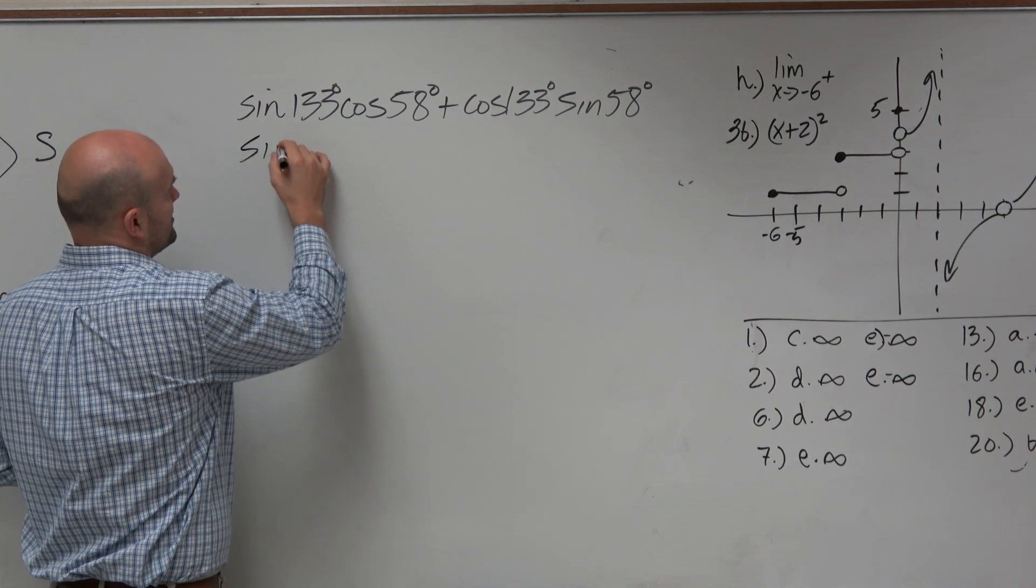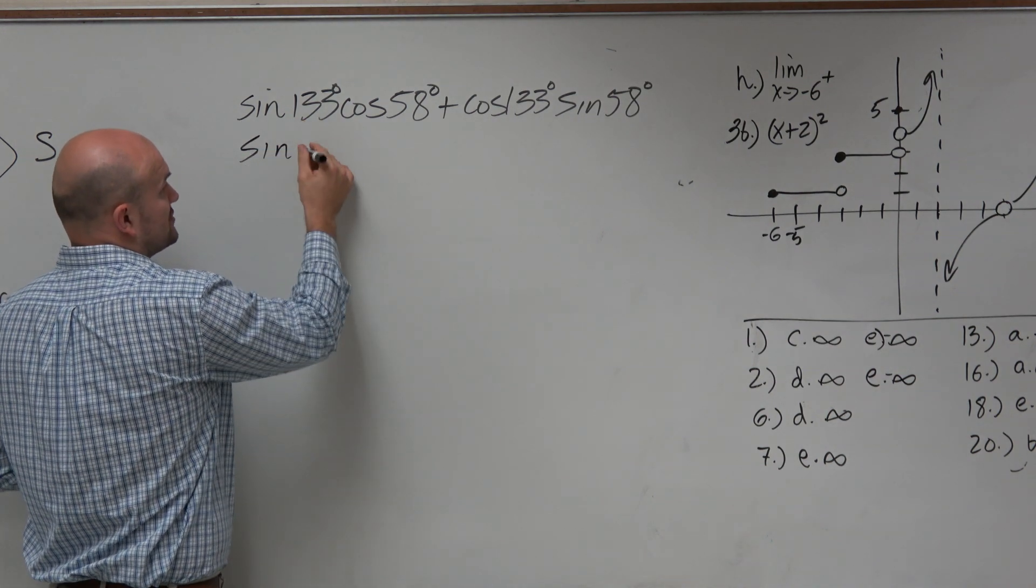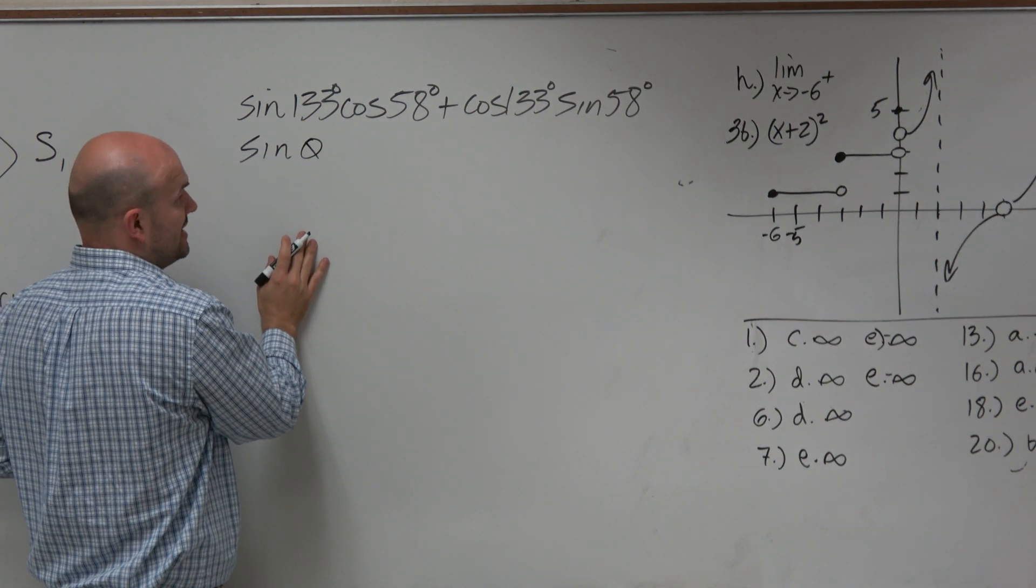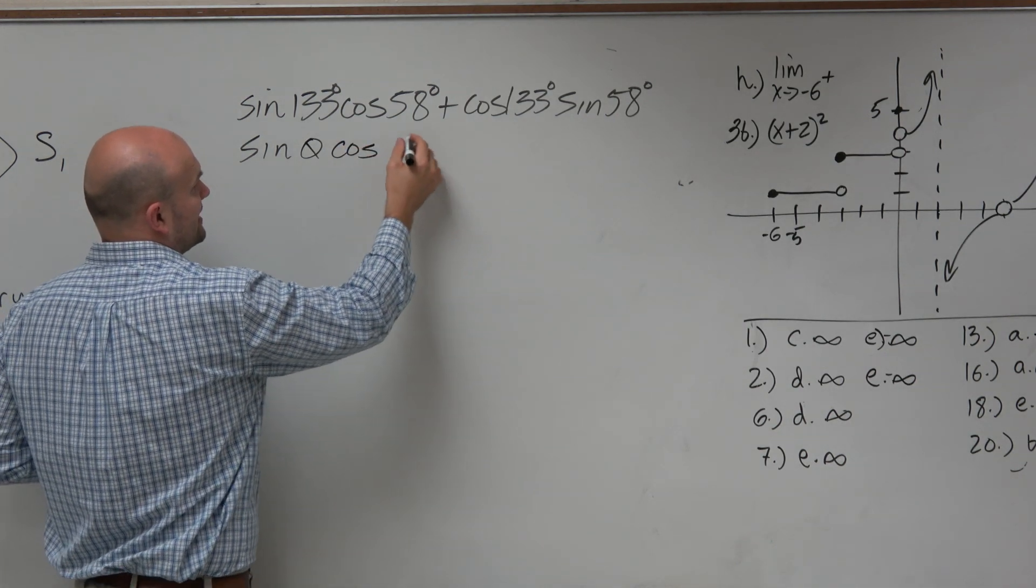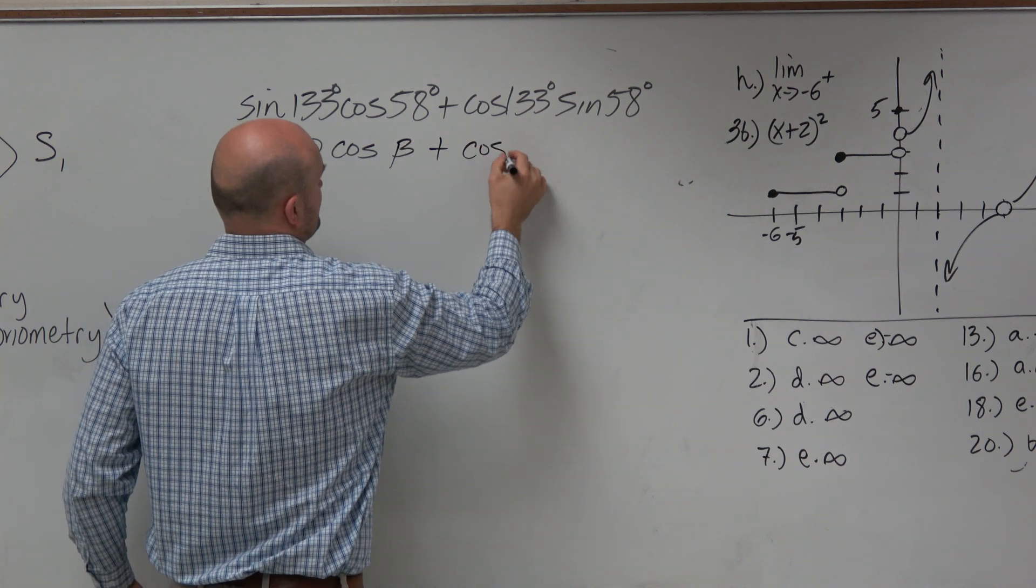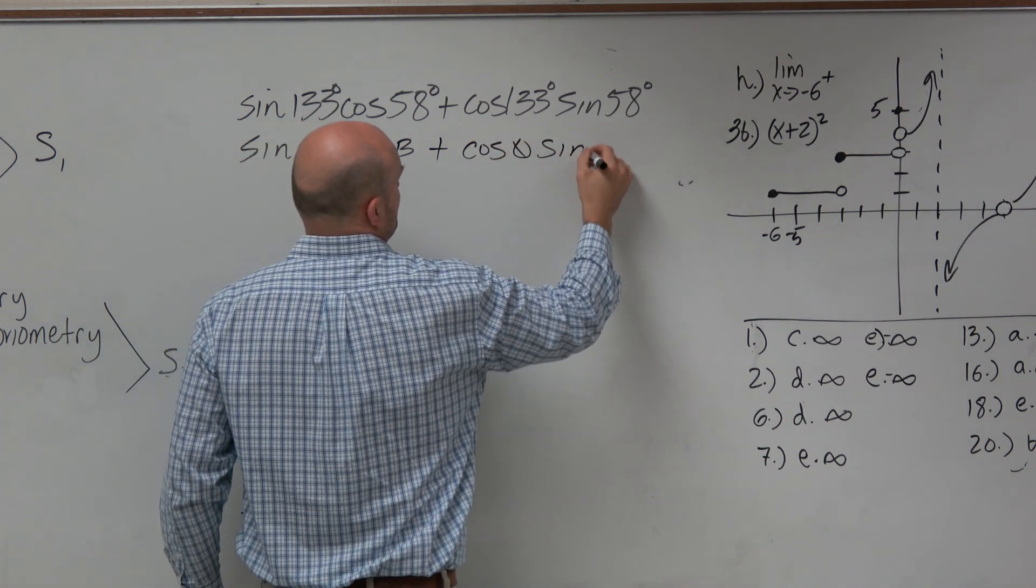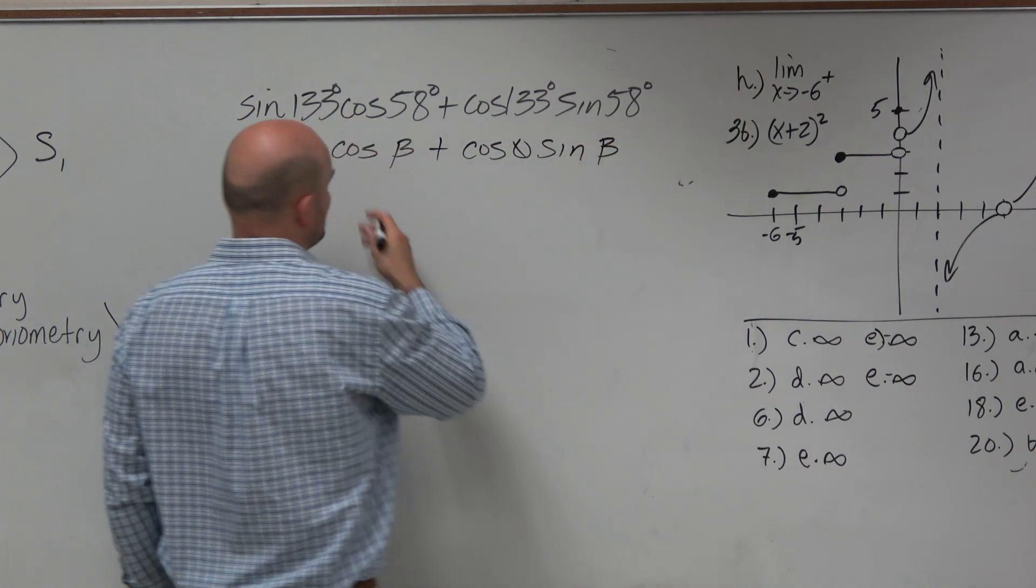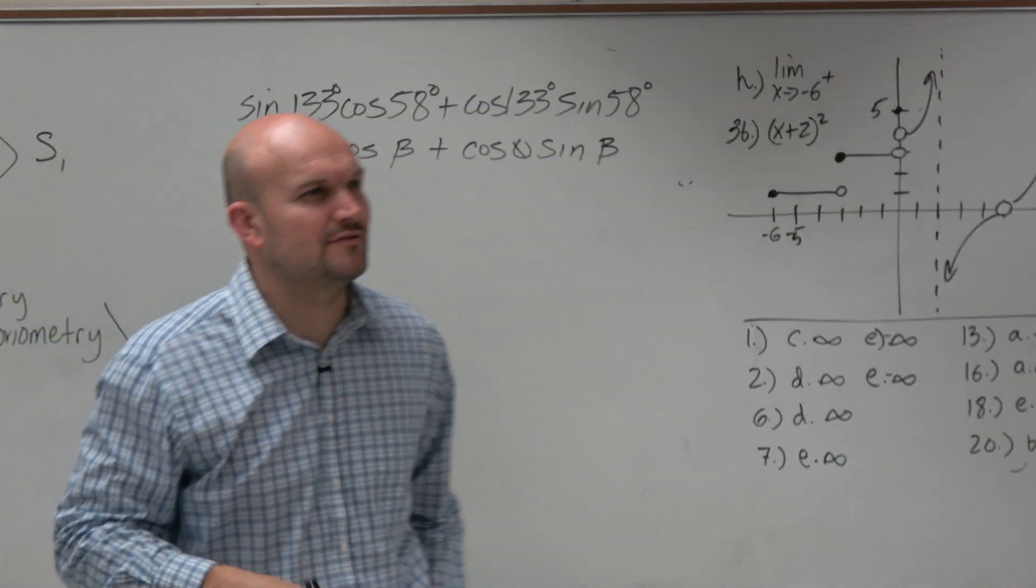And I don't remember how your formula sheet has it, but let's just pretend this is one angle. 133 is one angle. And let's say cosine is another angle. I think they used a and b or whatever may be the case.